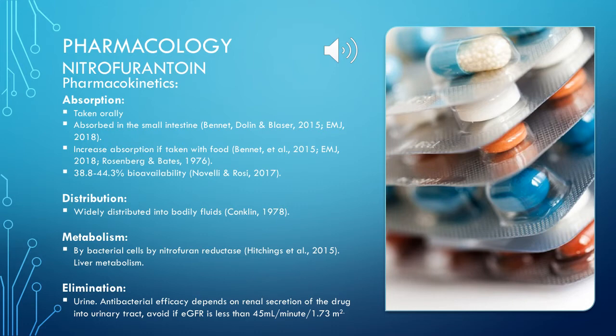Metabolism: nitrofurantoin is metabolised in bacterial cells by nitroreductase. Bettiol 2015 found that a small amount is eliminated by liver metabolism and biliary excretion, but these are minor pathways and no dose adjustments are advised for patients with liver failure. Elimination: Bettiol 2015 states it is mainly eliminated in the urine, and renal elimination involves glomerular filtration, tubular secretion, and tubular reabsorption.